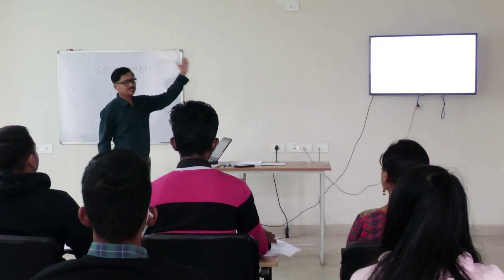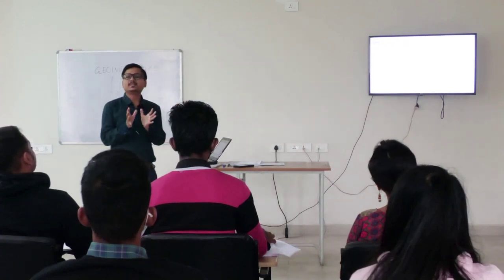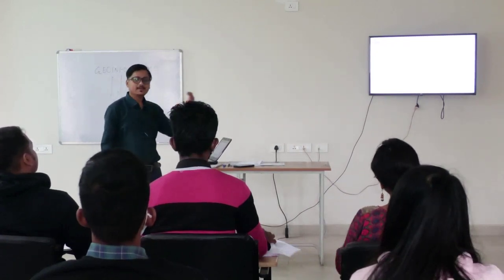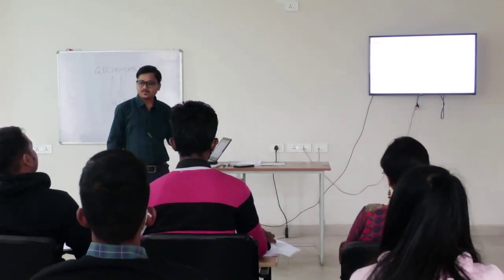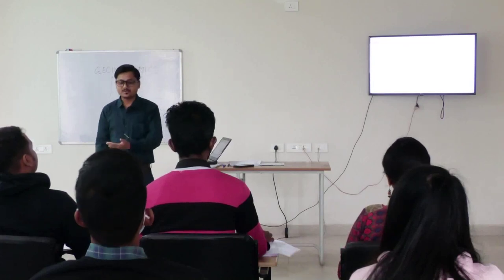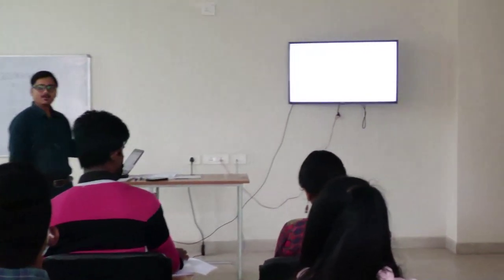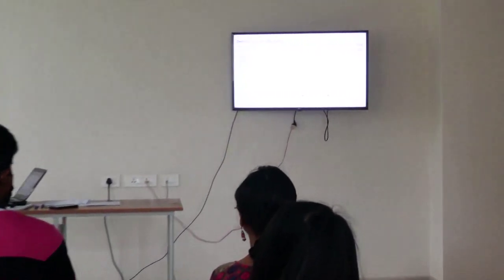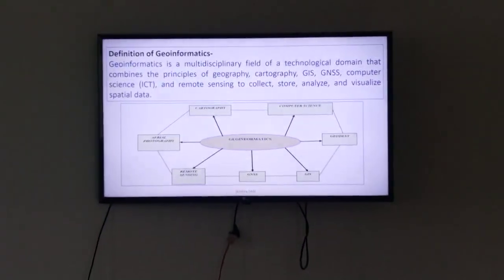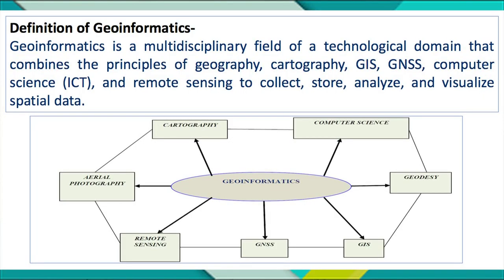Geoinformatics is a multidisciplinary science. Like we have nanoscience and bioinformatics, Geoinformatics is one of the emerging technological fields in the world. If we look at Geoinformatics, we have these basic elements or components of that subject.